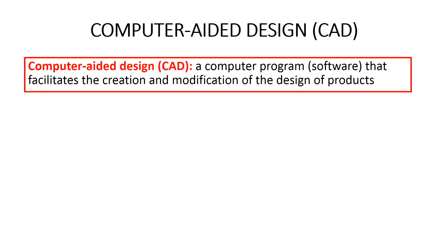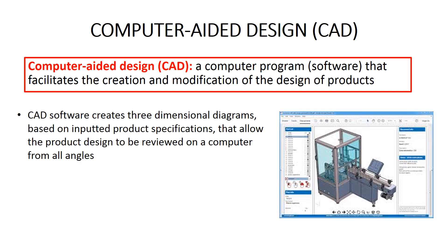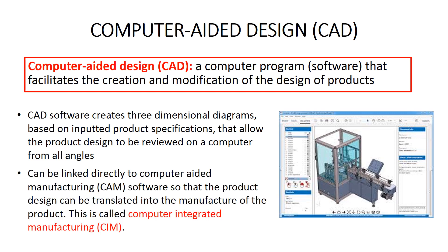The second and third technology strategies are computer-aided design and computer-aided manufacturing. Computer-aided design, or CAD, refers to a computer program — that is, software — that facilitates the creation and modification of the design of products. Find the term in your vocabulary sheets and write in the definition. CAD software creates three-dimensional diagrams based on inputted product specifications, allowing the product design to be reviewed on a computer from all angles. CAD software can be linked directly to CAM software so that the product design can be directly translated into manufacture.